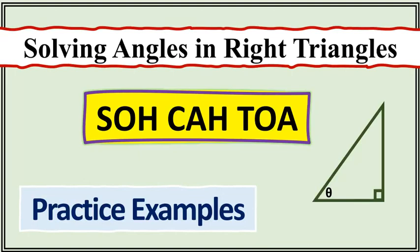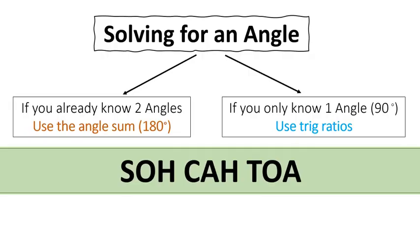Today I will show you how to solve angles in right triangles. If you already know two angles, you are going to use the angle sum theorem, which states that the sum of all the interior angles in a triangle equals 180 degrees. If you only know one angle, which would be your 90 degrees, you are going to use the trig ratios.